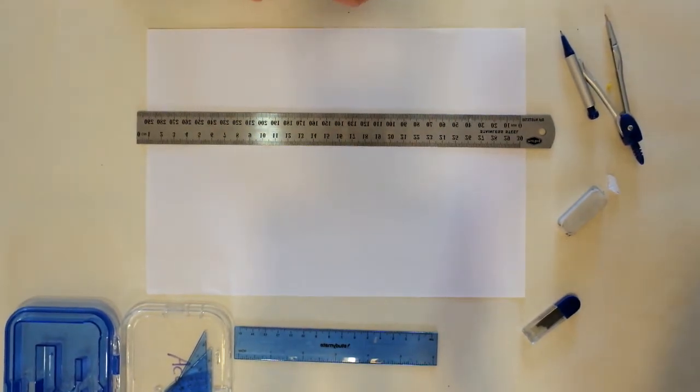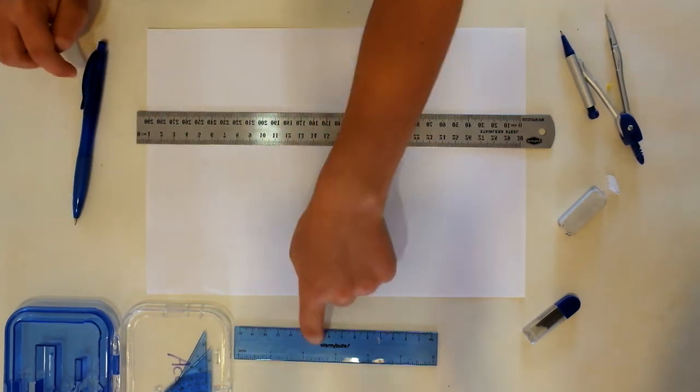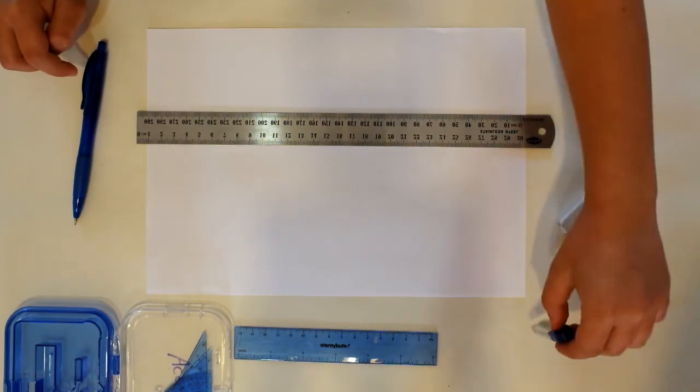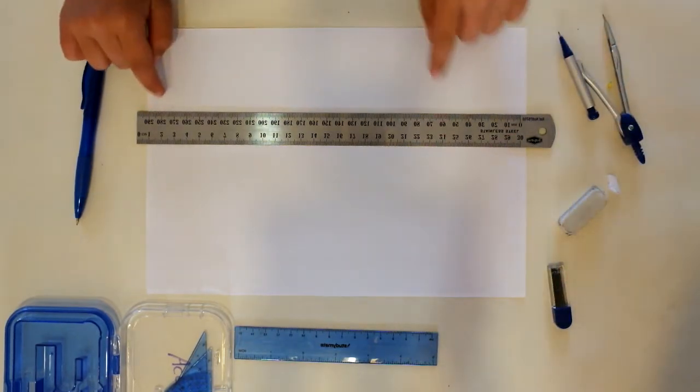And what are all the things you've got here? Mechanical pen, ruler, some more leads to put in stuff, a rubber and a compass and another ruler.